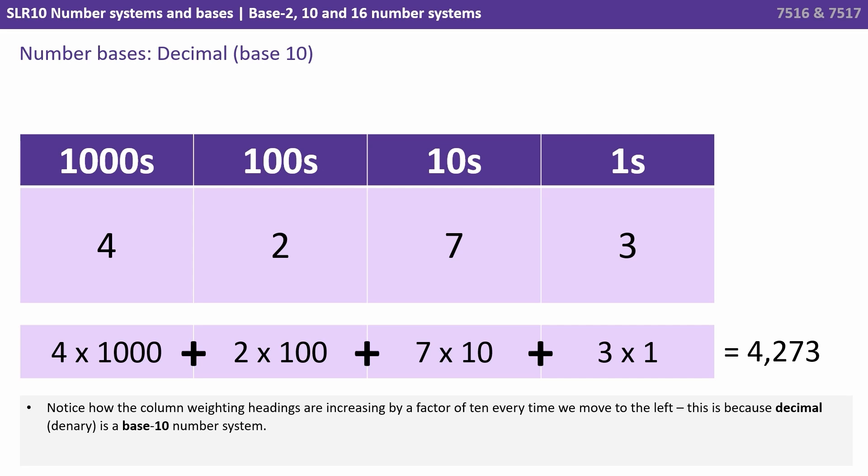Now of course we don't have to do this mental maths in our head, we've become so familiar with this number system that we see 4273 and we instantly read 4273. Notice how the column weightings or the headings are increasing by a factor of 10 every time we move to the left and this is because decimal is a base 10 number system.